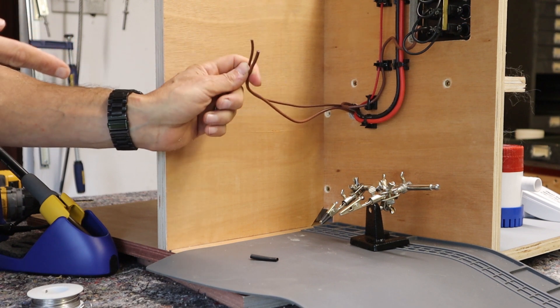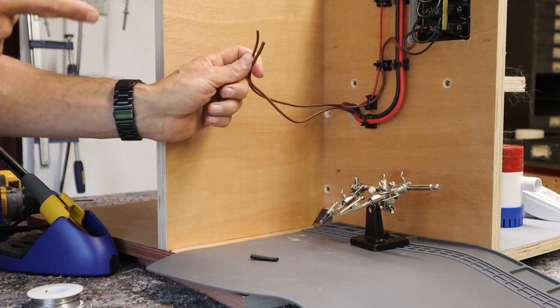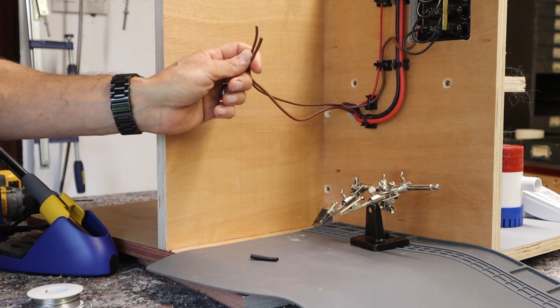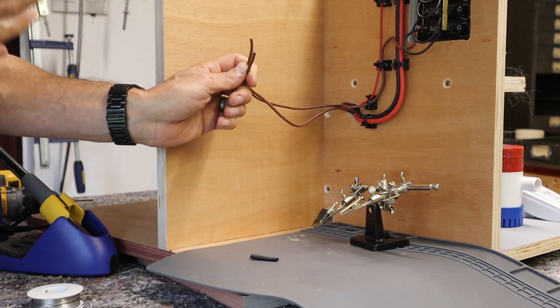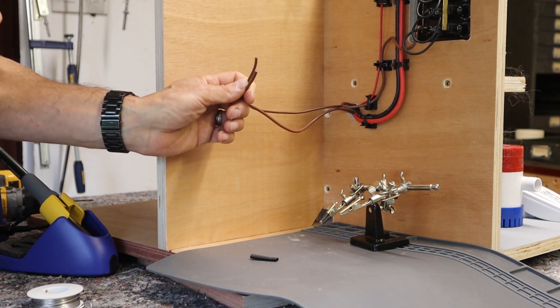The other thing to point out is one of the reasons and advantages of bringing things through to this side of the system to make the connection is we're high and dry here so I don't have to worry about a waterproof connection here. Whereas if I made the connections down in the bilge which is a wet area, then I would be thinking I need to waterproof them.